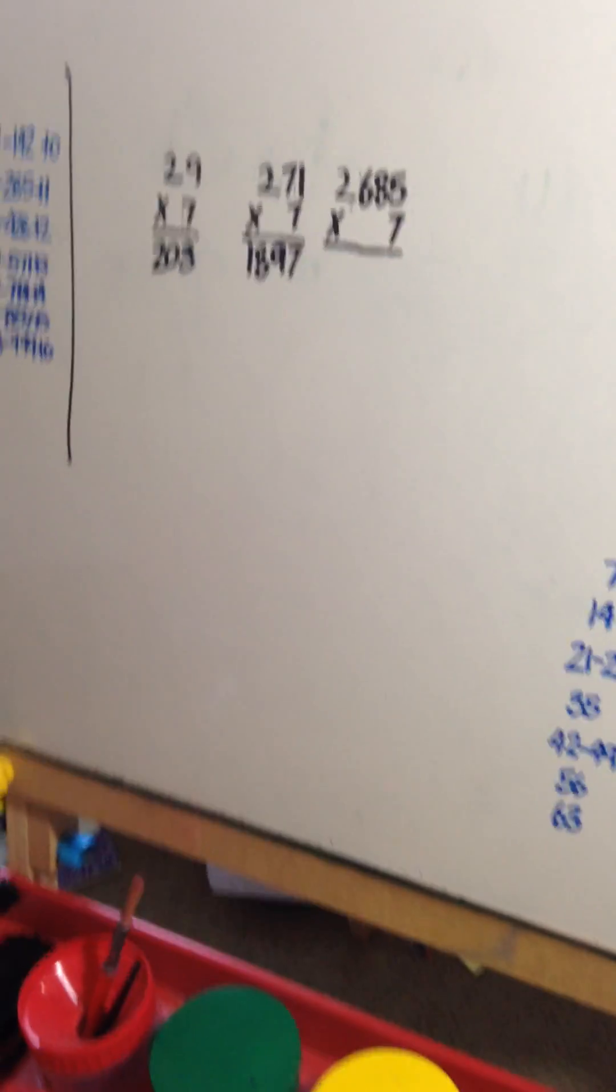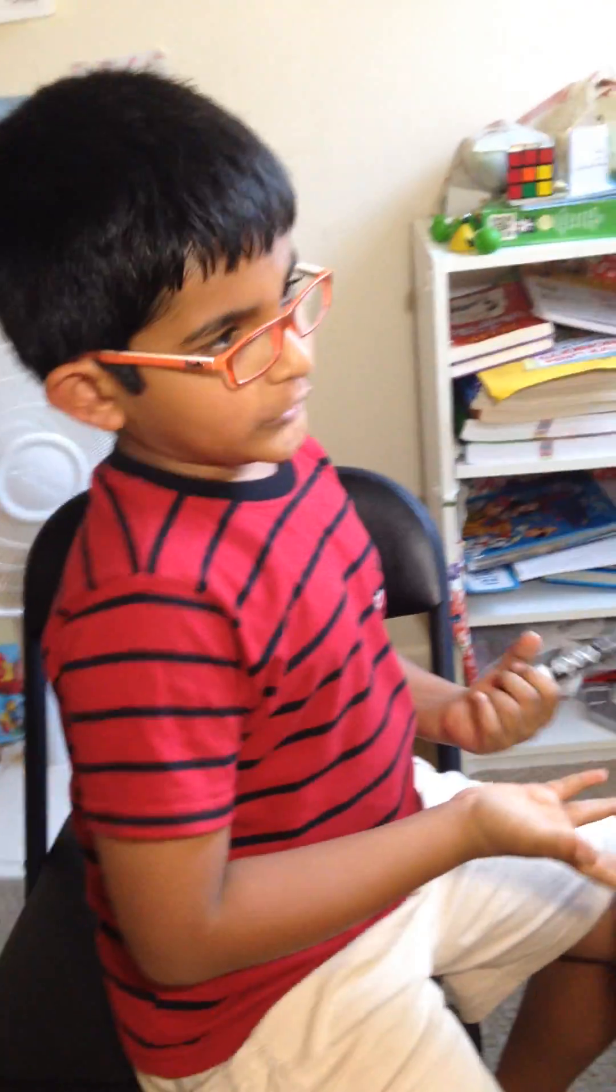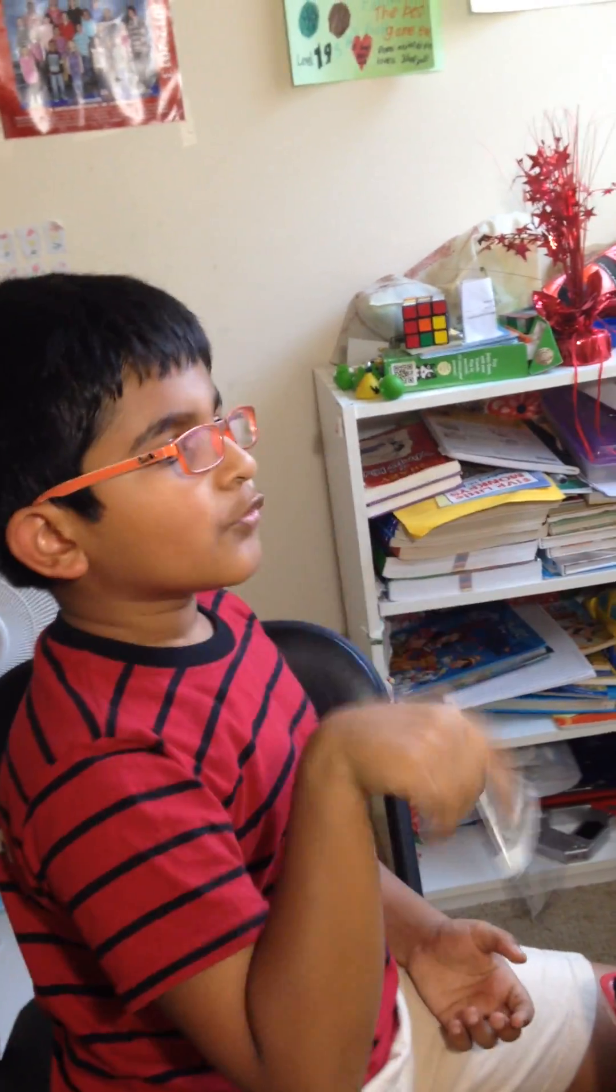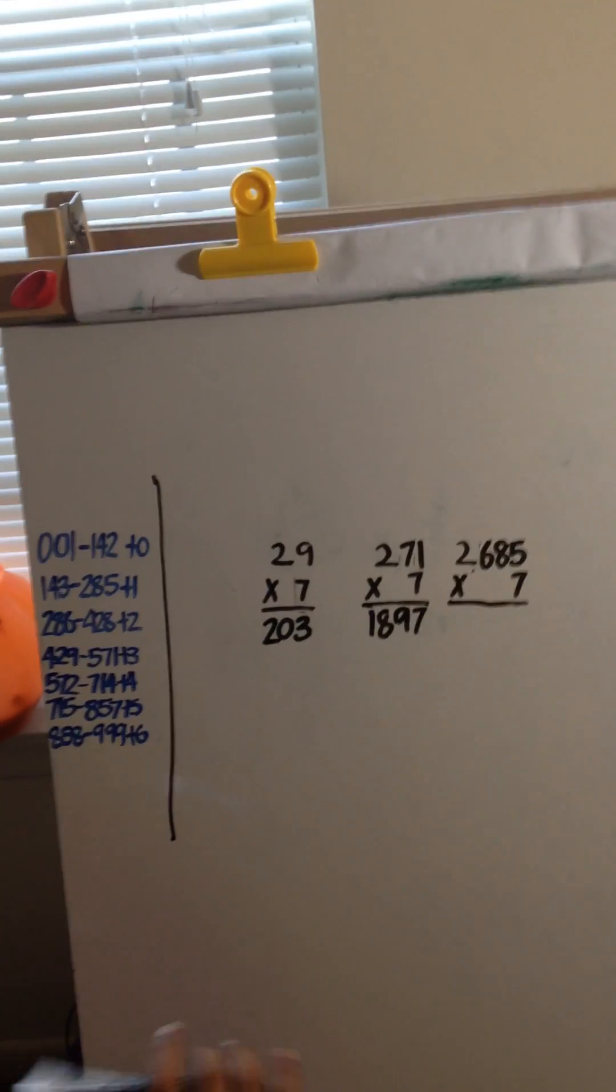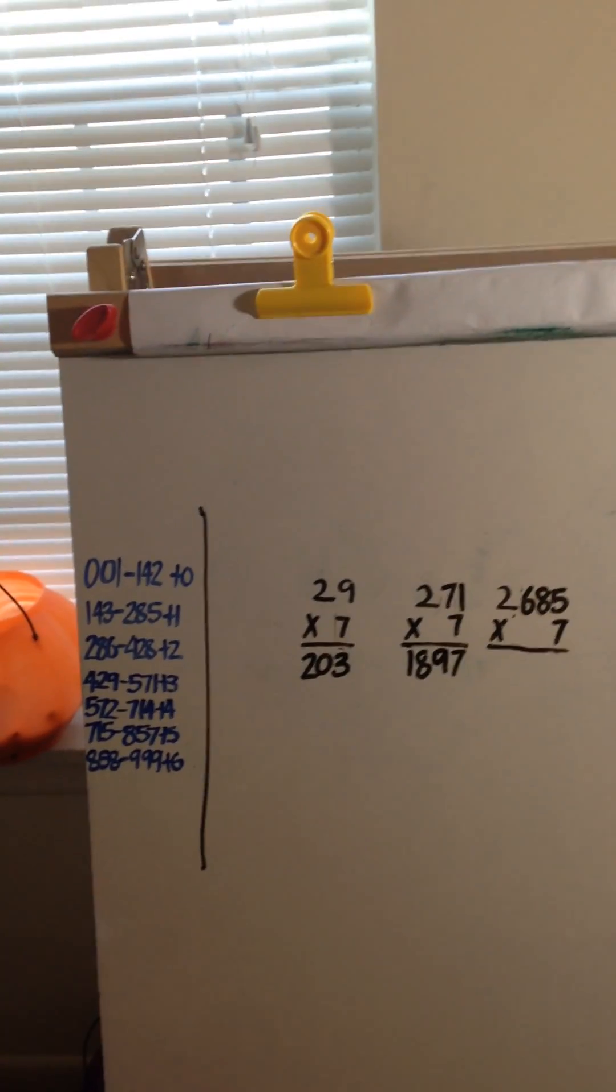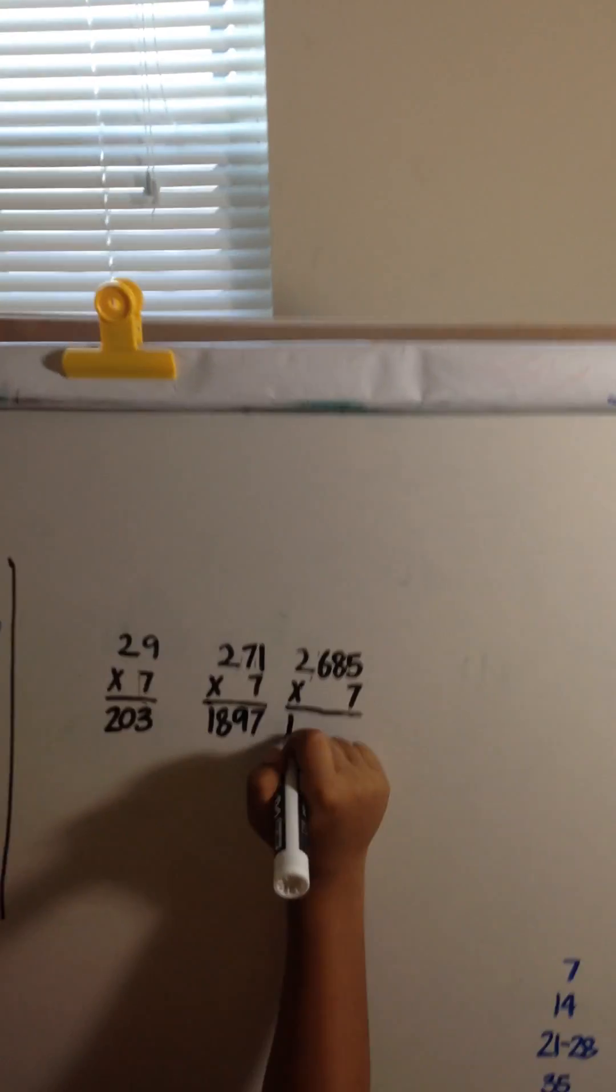2685 times 7. First you do 2 times 7, it's 14. Don't write that yet. Now we're going to the three-digit formula. According to the three-digit formula, 685 suits plus 4. So you write 18 at the beginning.